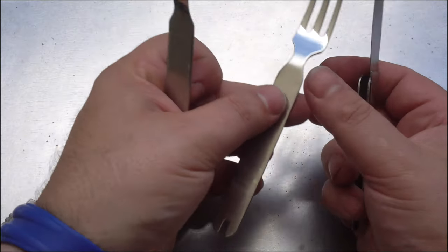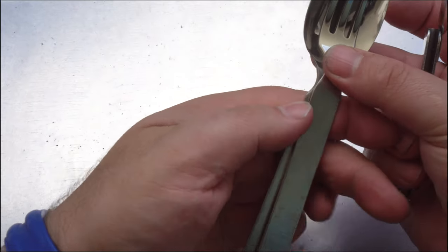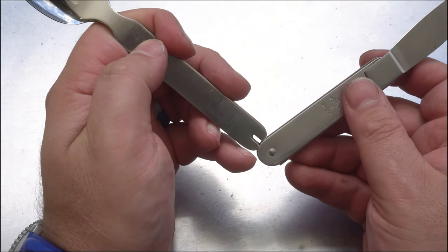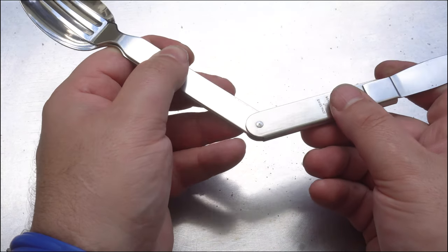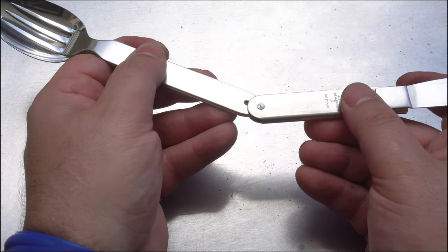Once you've finished using them, getting them back together is a pretty simple process as well. The fork goes in the spoon and then you just line up the notch with the pin. As you can expect with Wenger, there's not much tolerance, so it's quite a tight little fit.